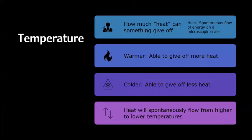In this presentation, we define temperature as how much heat something is able to give off, and by heat we mean the spontaneous flow of energy on a microscopic scale. Hence, warmer bodies are able to give off more heat, whilst colder bodies give off less heat. This is why heat spontaneously flows from higher to lower temperatures.